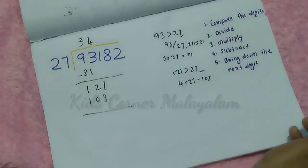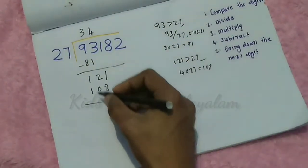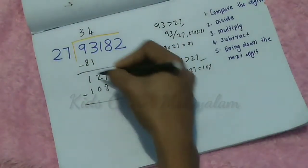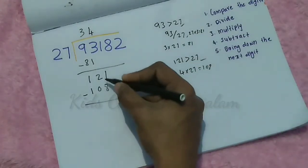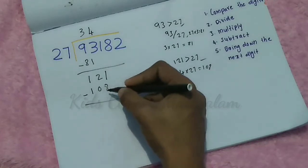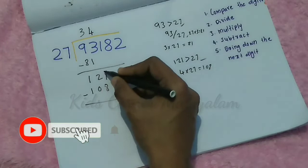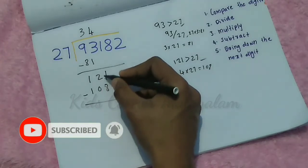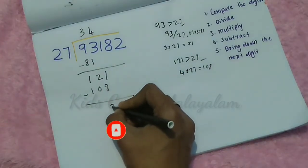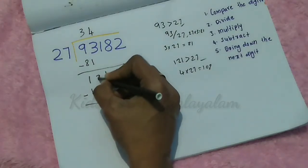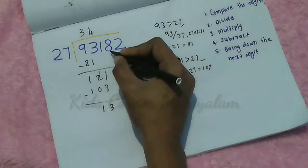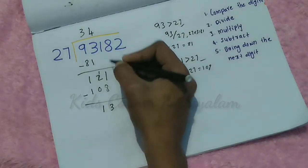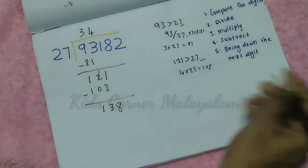Now subtract: 121 minus 108. We work it out: 11 minus 8 is 3, and 1 minus 0 is 1, giving us 13. Now bring down the next digit, which is 8, so we have 138.